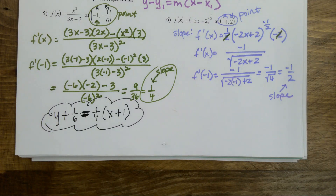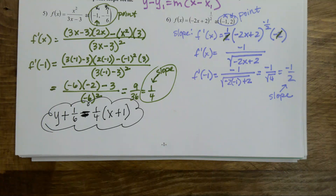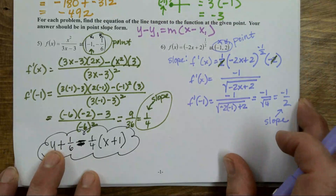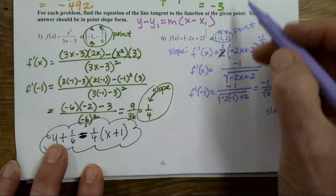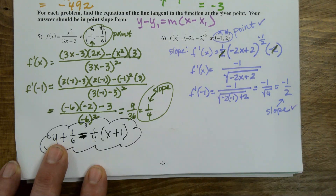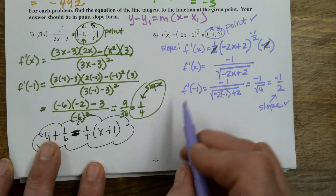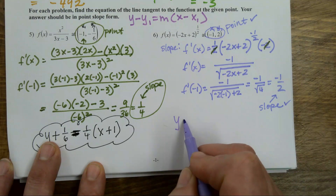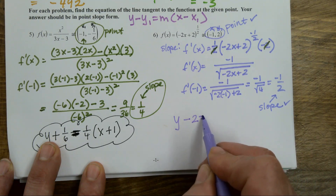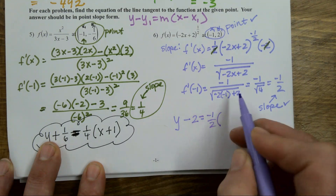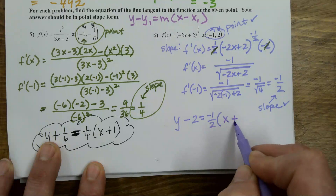Does that feel all right? I'm not quite done with this problem because they asked me to do the equation of the line. Again, point-slope form says all I need is a point and a slope. Y minus y1 equals the slope times x minus x1.